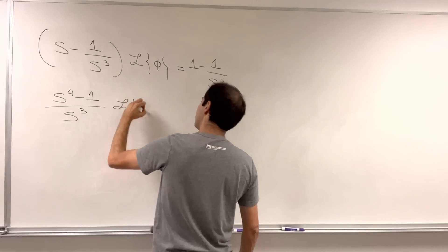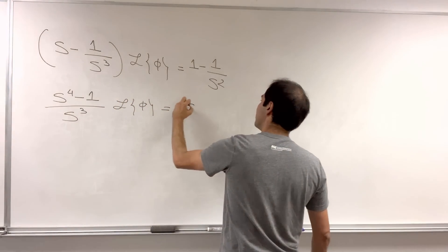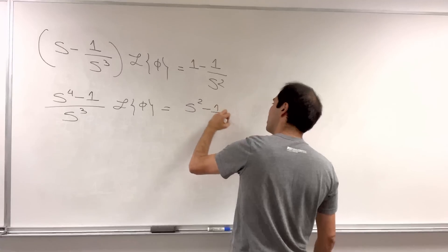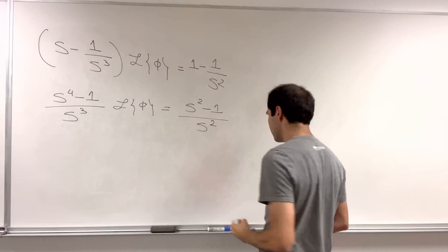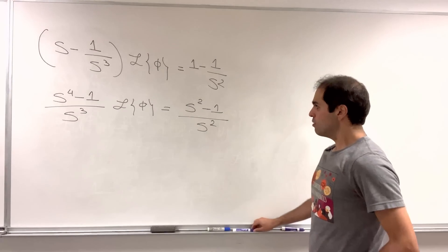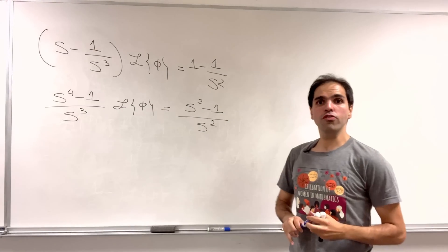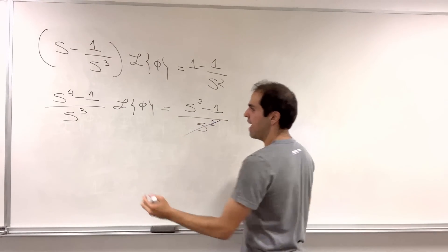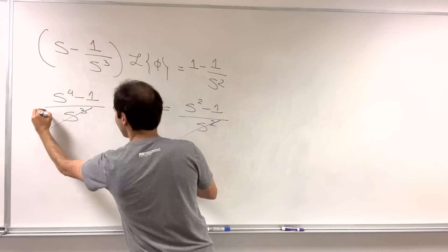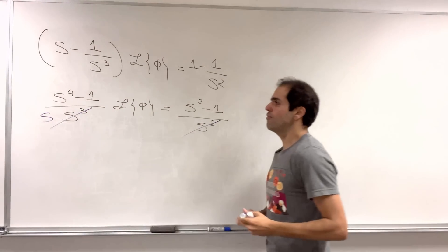equals s squared minus one over s squared. Now, we can already sort of cancel out the denominators.